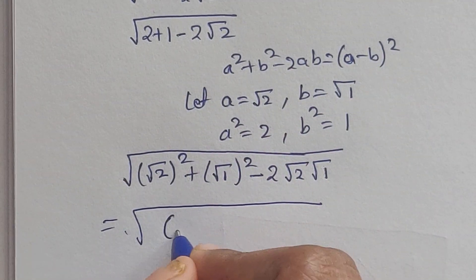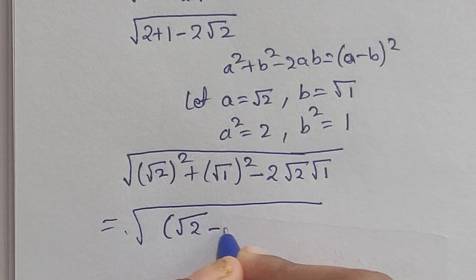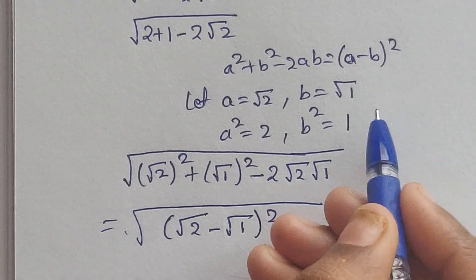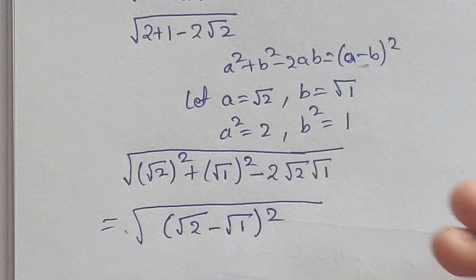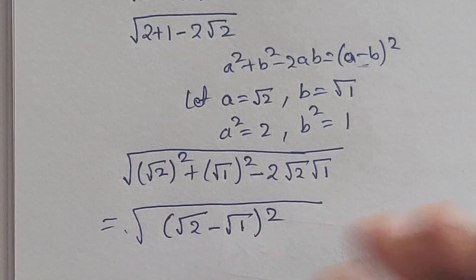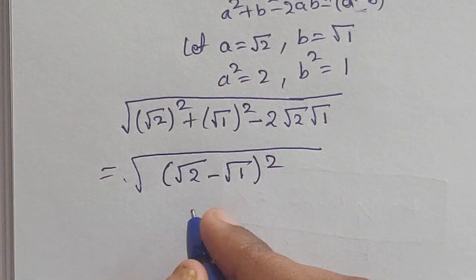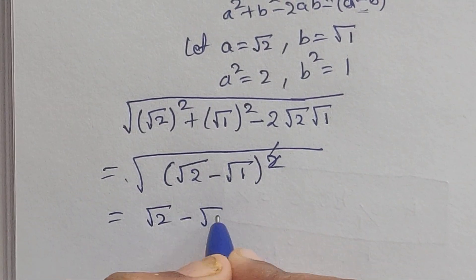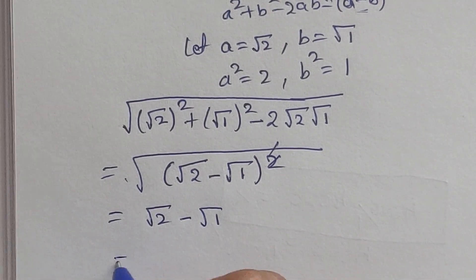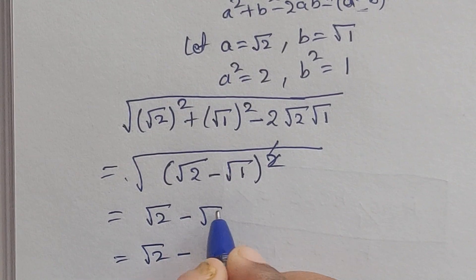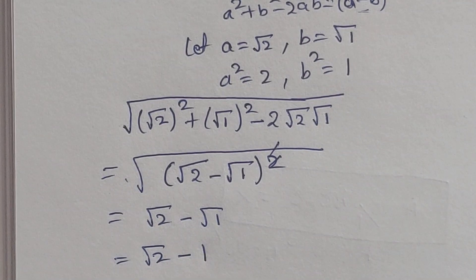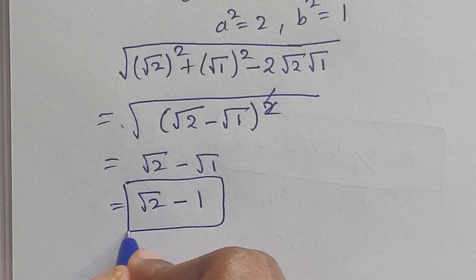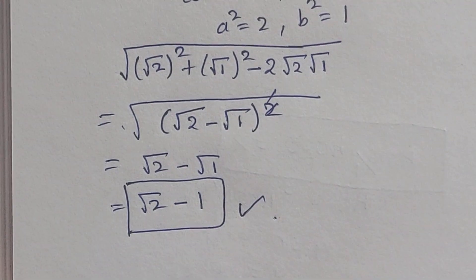So we can write it as (square root of 2 minus square root of 1) squared. Now the square and square root cancel, giving us square root of 2 minus square root of 1, which equals 1. So the answer is 1. Thank you for watching.